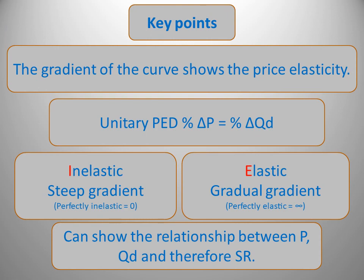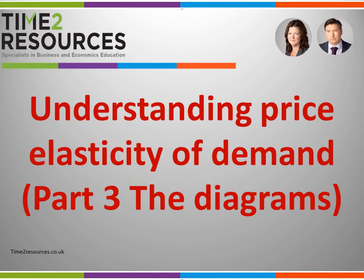The key points: the gradient of the curve shows the price elasticity. Unitary price elasticity of demand is where the percentage change in price equals the percentage change in quantity demanded. An inelastic demand curve will have a steep gradient — if a product was perfectly inelastic this would be a straight vertical line. An elastic demand curve has a gradual gradient — if perfectly elastic this would be a horizontal line. We can use these curves to show the relationship between price, quantity demanded, and therefore sales revenue.